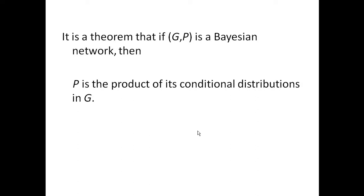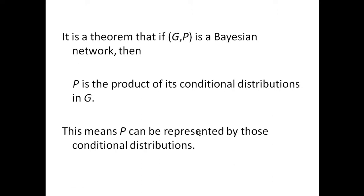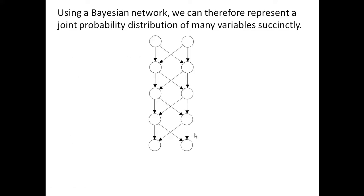It is a theorem that if a graph is a Bayesian network, then P is the product of its conditional distributions in G. That means P can be represented by those conditional distributions. So think about that example involving height, wage, and gender. We showed that height and wage are independent given gender. So if we draw that DAG with gender pointing to height and wage, then each variable is independent of its non-descendants given its parents. Height is independent of wage given gender, and therefore it can be represented by the product of the conditional distributions.